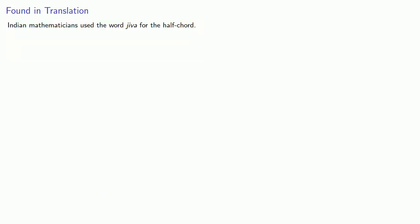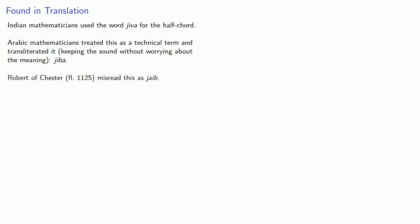One last note: Indian mathematicians used the word jiva for the half chord. Arabic mathematicians treated this as a technical term and transliterated it, keeping the sound without worrying about the meaning. In Arabic, this becomes jiba. Islamic works on trigonometry began making their way into European consciousness during the Middle Ages. Robert of Chester, who lived around 1125, misread this as jaib.